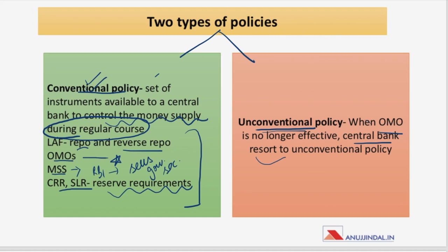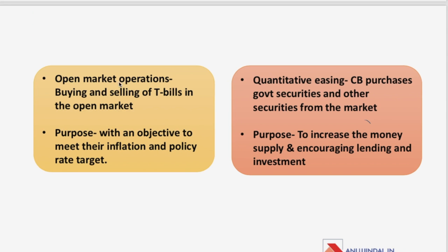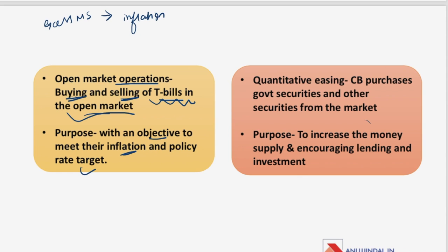When conventional policy becomes ineffective, particularly OMOs, the central bank resorts to unconventional policy, and quantitative easing (QE) is the way to implement it. Open Market Operations involve two-way transactions — the RBI can either buy or sell T-bills to meet inflation and policy rate targets. For example, if there is excess money supply and inflation, RBI sells government securities so people buy T-bills with money, reducing money supply and thereby inflation.